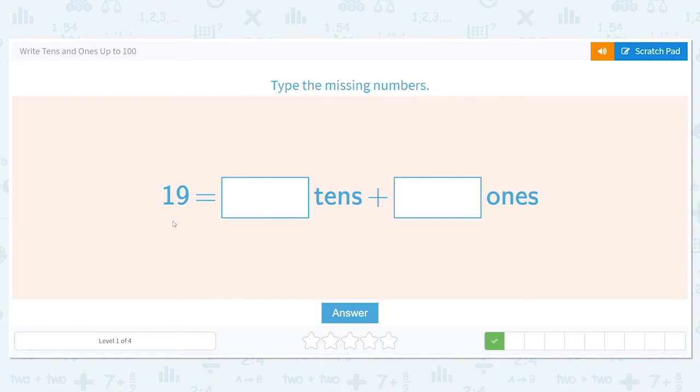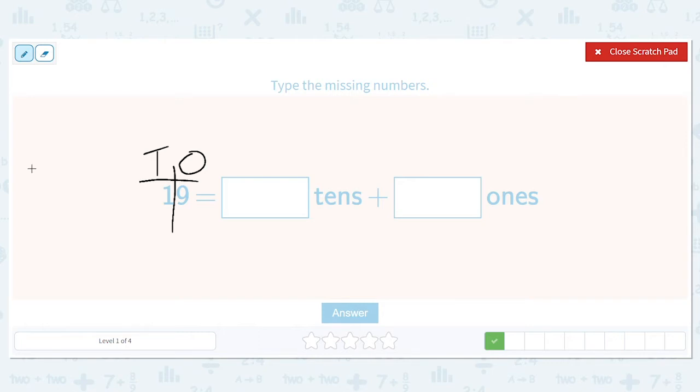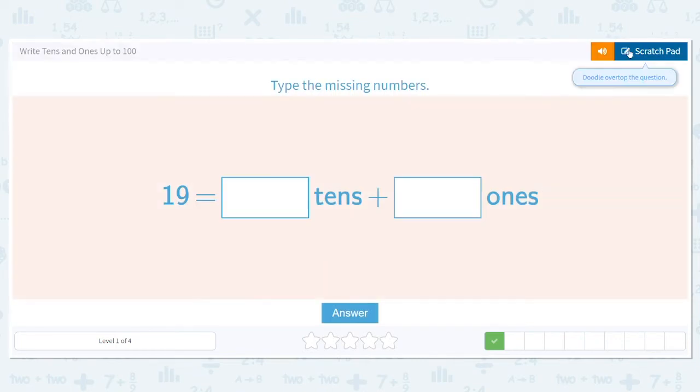Next number we have is 19. Now what we can do here is we can divide this. I'm going to draw a line here and here and this side where the nine is is my one side and this side the other side where the one is that is my tens. So looking at it how many tens do I have? I have a one there so that tells me there is one ten. I have nine ones so I should put a nine here. So again I have one ten and nine ones.